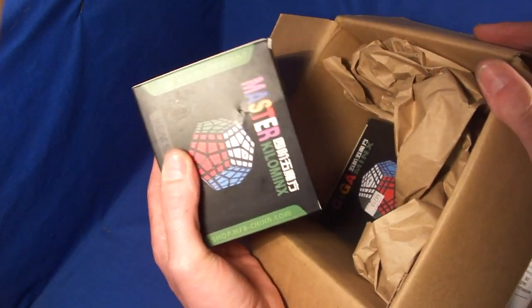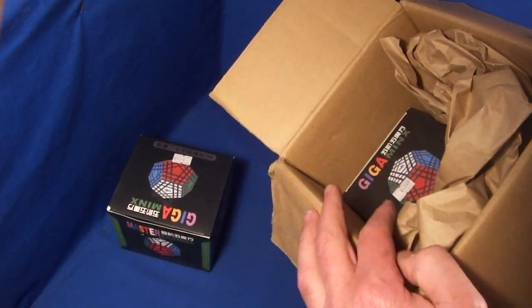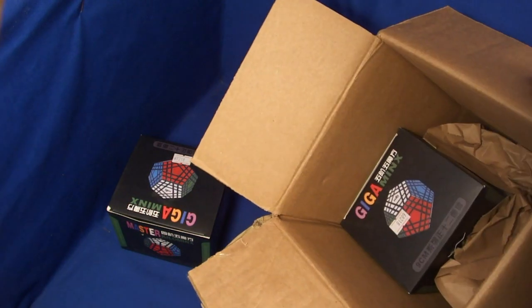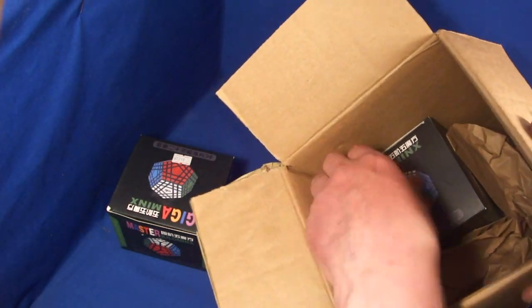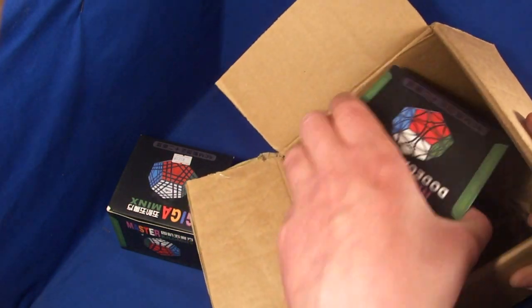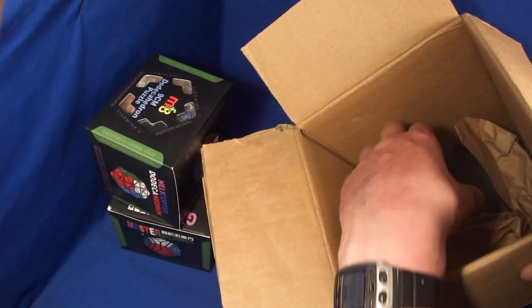These puzzles are corner turn and star minxes, also known as dino dodecahedra. The boxes they come in are also used for other puzzles, so that's why there are things like gigaminxes on the outside.